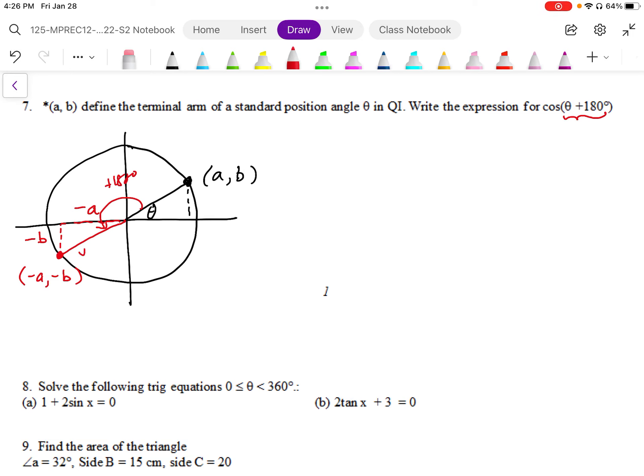The hypotenuse of this or the radius is going to be square root of A squared plus B squared. And then I can establish the cosine of this based on those lengths. So cosine of theta plus 180 degrees is going to be the horizontal negative A over the radius square root of A squared plus B squared.